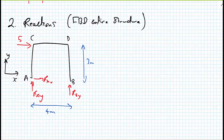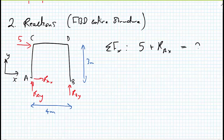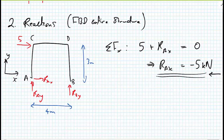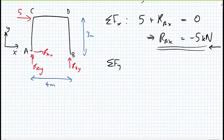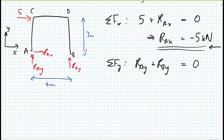Setting up the equations of equilibrium: sum of forces in the X direction gives 5 + RAX = 0, therefore RAX = −5 kilonewtons — the minus sign means it acts opposite to our assumed direction. For the sum of forces in the Y direction, RAY + RBY = 0. We'll label this equation two and reuse it later.